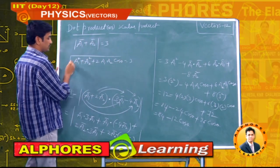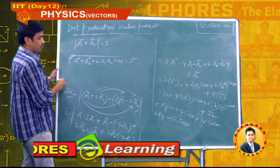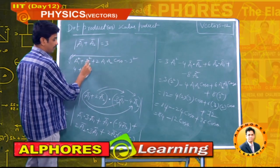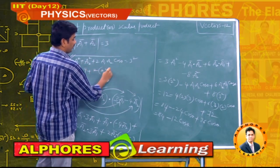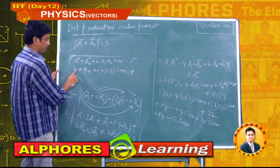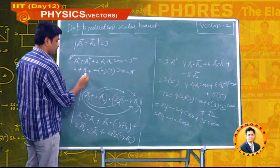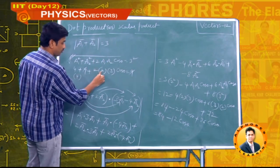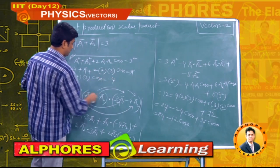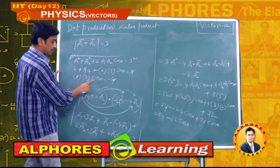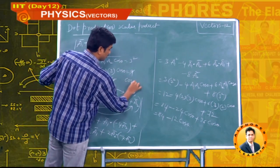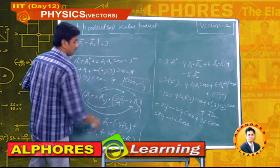Squaring both sides: a₁² + a₂² + 2a₁a₂cosθ = 9. Substituting a₁ = 2 and a₂ = 3: 4 + 9 + 2(2)(3)cosθ = 9. The 9's cancel, leaving 4 + 12cosθ = 0, so cosθ = −4/12 = −1/3.